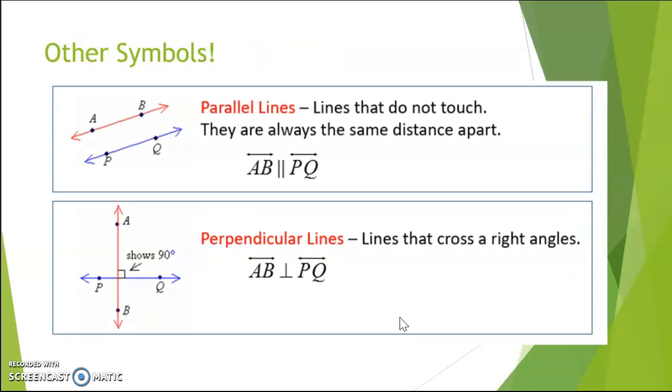What about some other symbols that we're going to be using and looking at? We've already talked about some parallel lines. I don't know if we've officially written it with a symbol yet, but this symbol in between here, with the two double lines, that's a parallel symbol. So this is saying that line, see the little tiny arrows at the end there? That's line AB is parallel to line PQ.